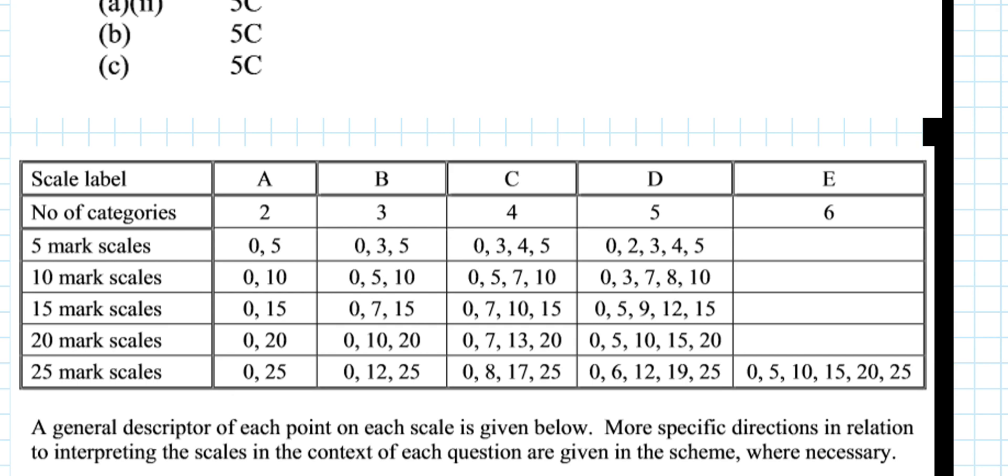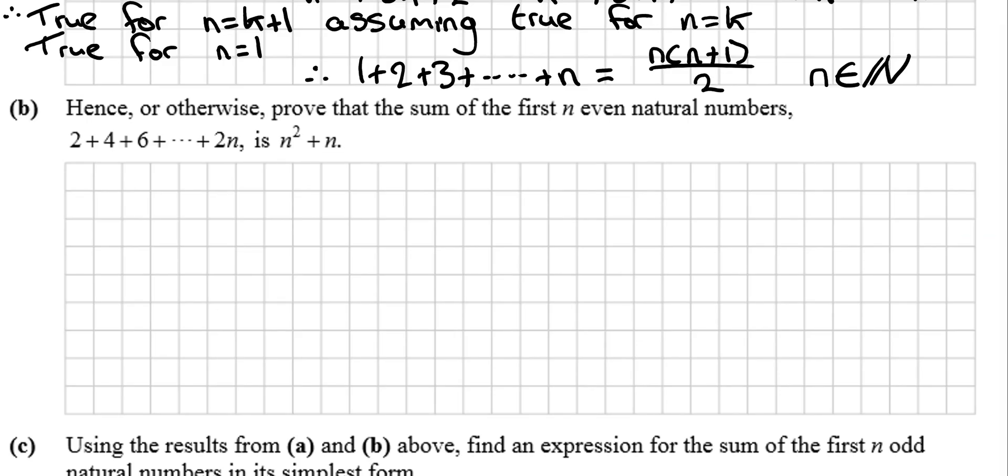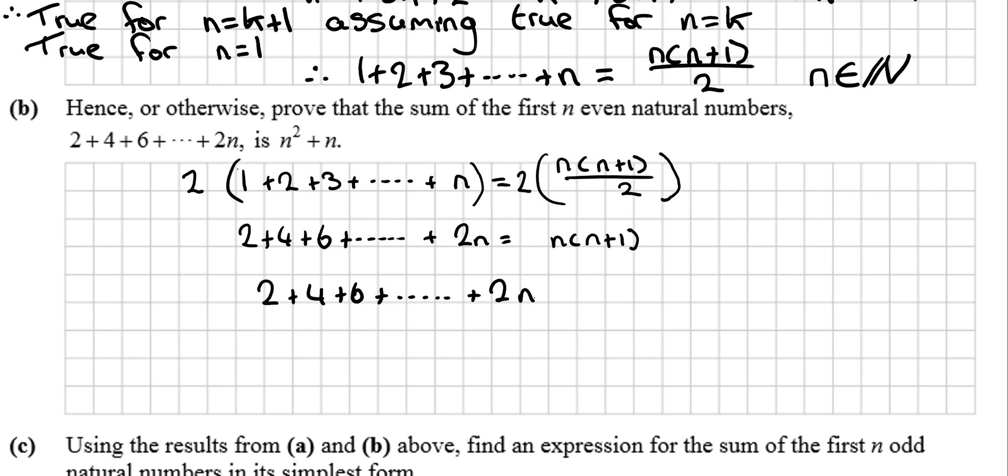Nice number of marks going for it, probably fairly fair enough. Okay, so it's saying, hence or otherwise prove that the sum of the first n even natural numbers is equal to this. Okay, hence strongly implying that we can use what we've already proven. So, let's go, we know for a fact that this is true. If we were to put a bracket around both sides and multiply both sides by 2, what would you end up with? So, you'd get 2 plus 4 plus 6 plus 2n is equal to n by n plus 1. So, the 2's cancel over here. And then multiply that out, 2 plus 4 plus 6 plus dot dot dot plus 2n is equal to n squared plus n. And that's QED, that's the question done, that's it proved.